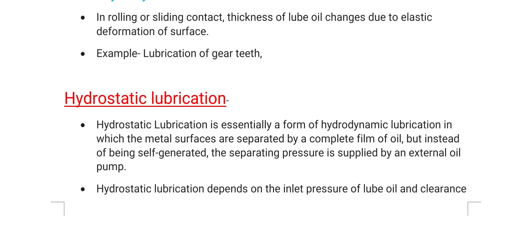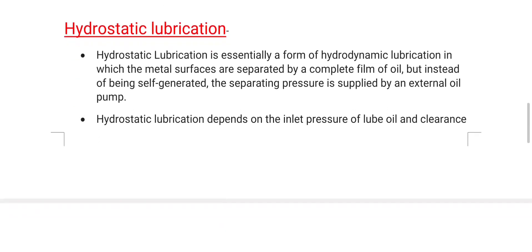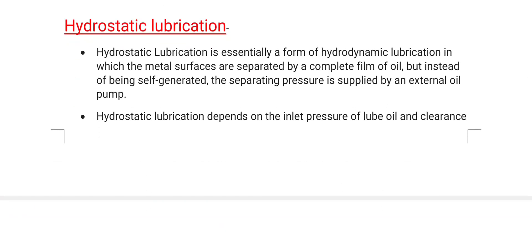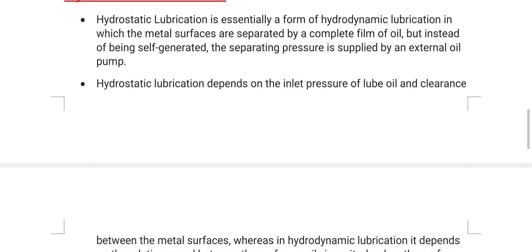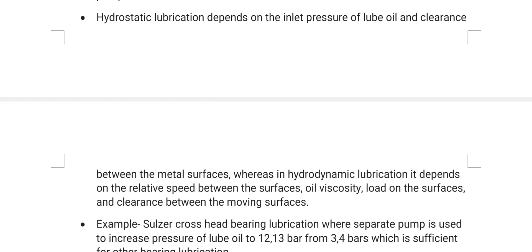The second type is hydrostatic lubrication. Hydrostatic lubrication is essentially a form of hydrodynamic lubrication in which the metal surfaces are separated by a complete film of oil, but instead of being self-generated, the separating pressure is applied by an external oil pump. Hydrostatic lubrication depends on the inlet pressure of lube oil and clearance between the metal surfaces, whereas hydrodynamic lubrication depends on relative speed, oil viscosity, load, and clearance between moving surfaces.